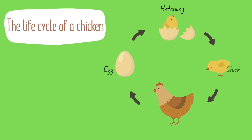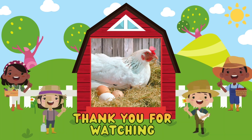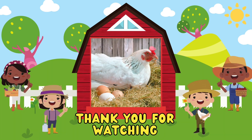Let's review again, friends, about the life cycle of a chicken. We can see it starts from egg, after that the egg will be hatchling, and then become a chick, and then the chick will grow to become a chicken. Thank you for watching — see you next time, bye bye!